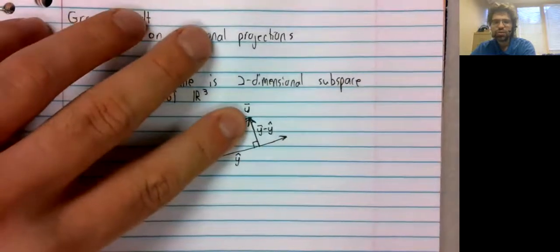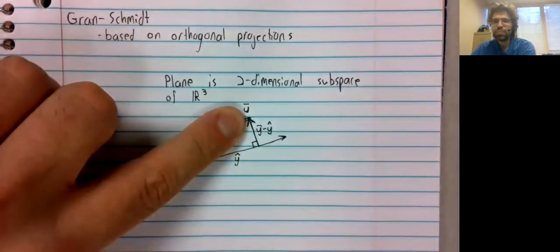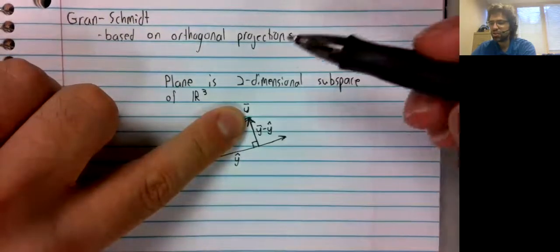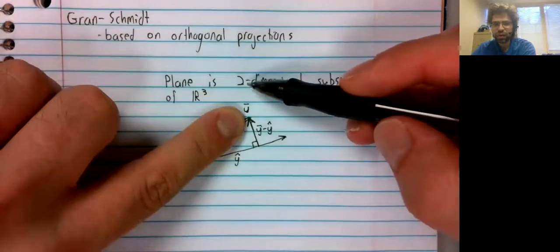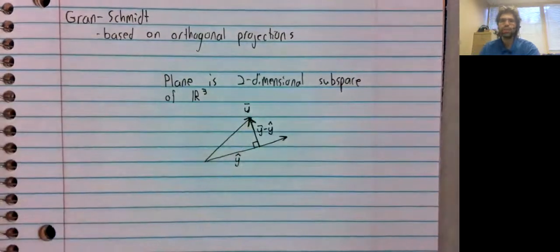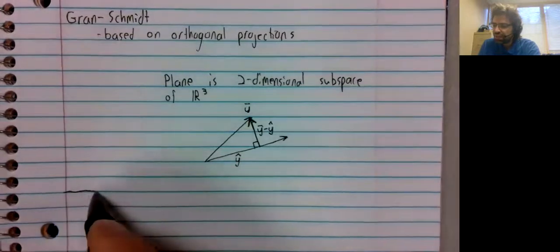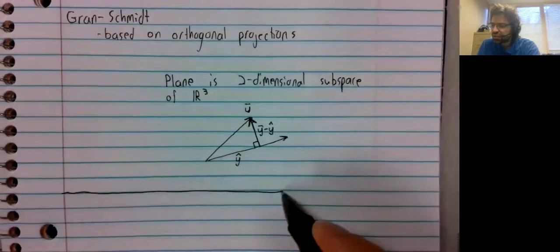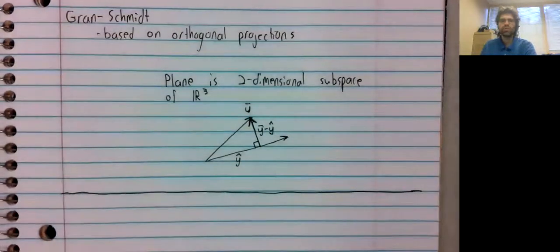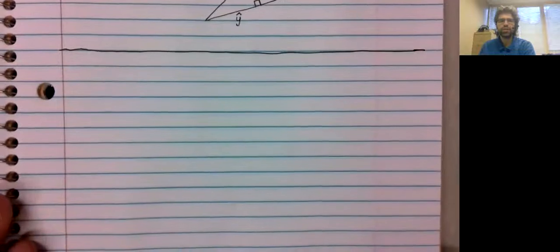So these two vectors are two linearly independent vectors in a two-dimensional space. So they're a basis of this two-dimensional space. And that gives you the essential idea behind the Gram-Schmidt process.